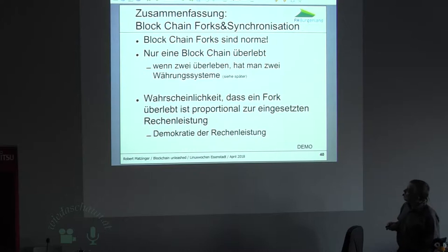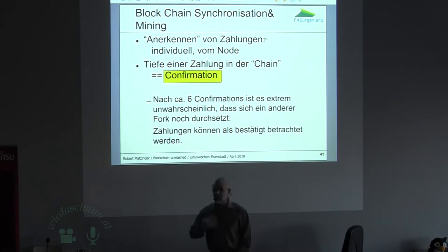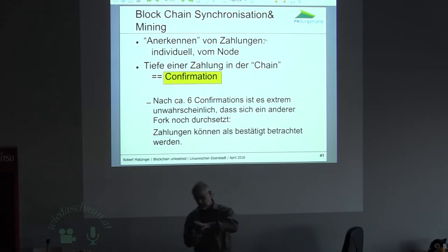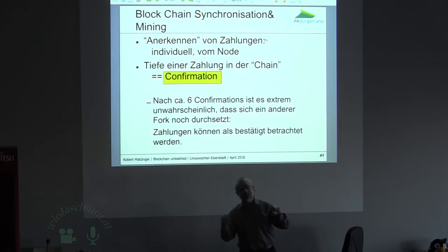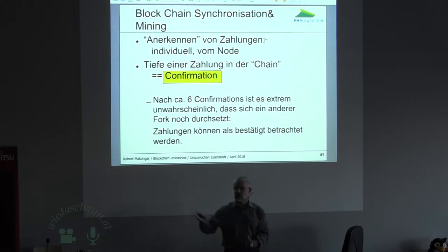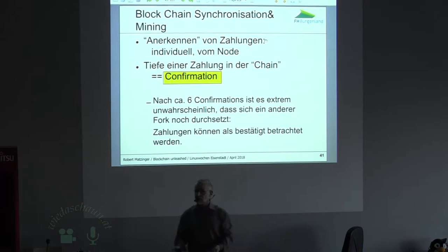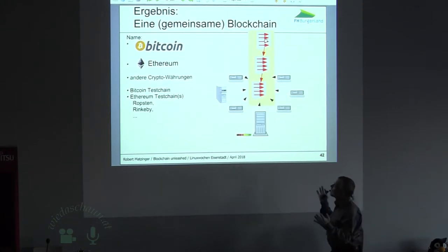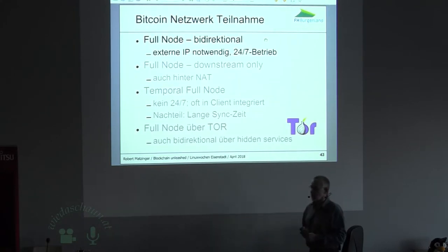Die Wahrscheinlichkeit, dass ein Fork überlebt, ist proportional zur Rechenleistung. Was soll ich jetzt glauben? Ich glaube sukzessive an eine Transaktion, wenn sie eine bestimmte Tiefe in der Chain erreicht hat — normalerweise sagt man bei sechs Confirmations. Wenn meine Transaktion circa sechs Blöcke in der Tiefe ist, ist die Wahrscheinlichkeit, dass noch eine andere Chain auftaucht, die dann die Realität wird, so verschwindend gering, dass man sie vernachlässigen kann. Wenn es eine kleine Zahlung ist und ich es eilig habe, glaube ich es vielleicht schon früher. So wird das gemacht — eine Blockchain ist eine Währung. Es gibt verschiedene Blockchains: Bitcoin, Ethereum, es gibt noch verschiedene Testchains. In jedem Fall brauche ich einen Fullnode, um wirklich teilzunehmen — also eine externe IP, einen 24/7-Betrieb.